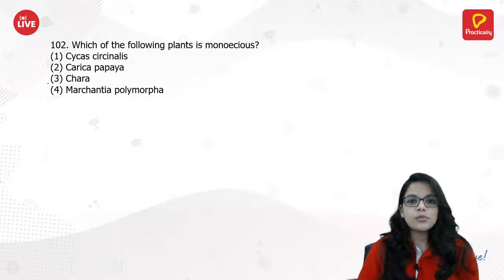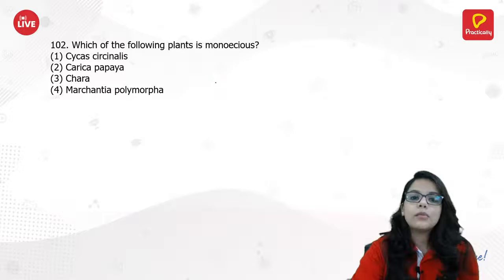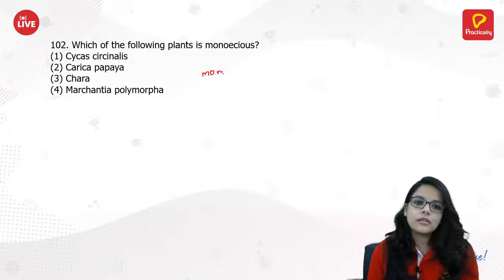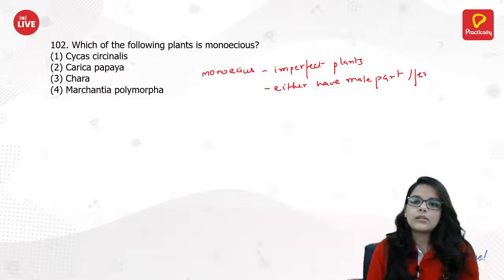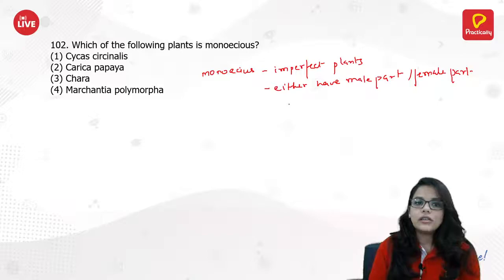Which of the following plants is monoecious? We know androcium is the male part and gynoecium is the female part. Monoecious plants are imperfect plants because their flowers have either the male part or the female part — they are not complete. So they are monoecious. The answer is Chara.